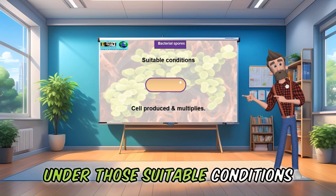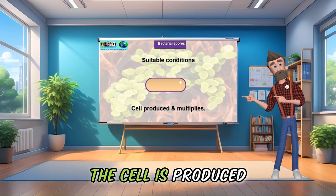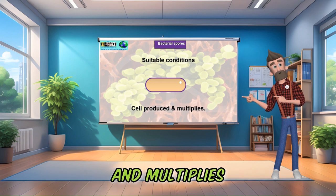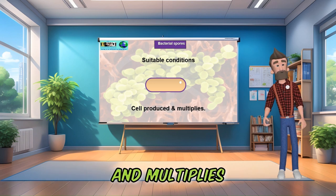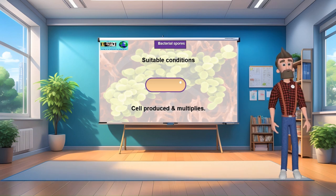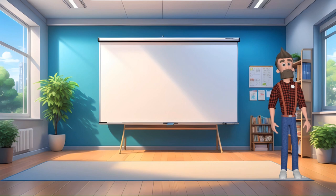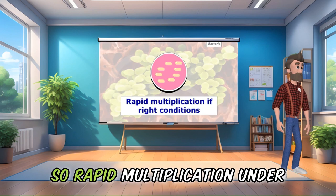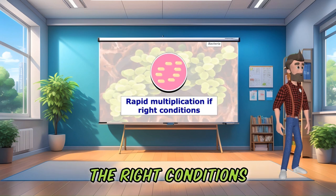Under those suitable conditions, the cell is produced and multiplies — rapid multiplication under the right conditions.